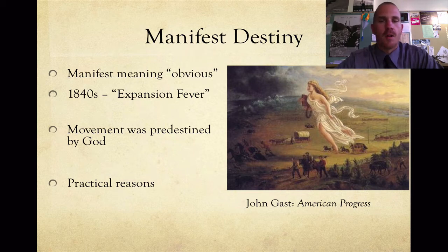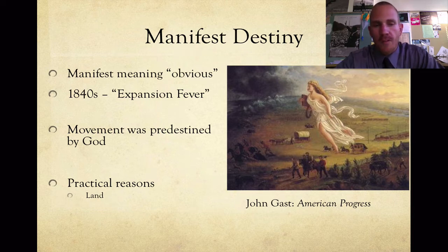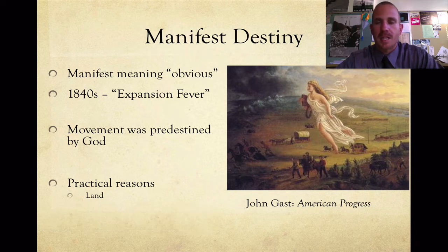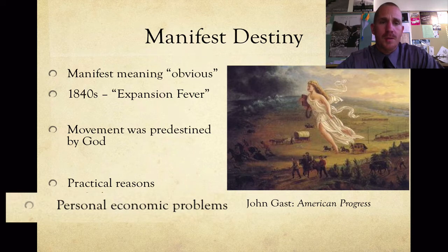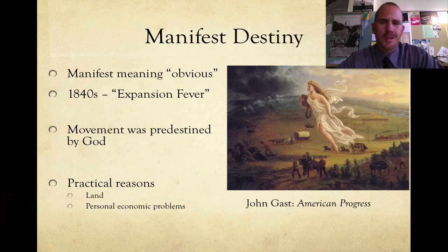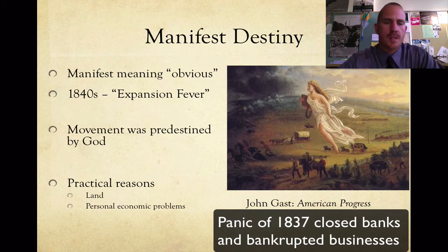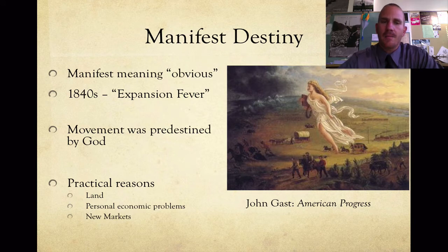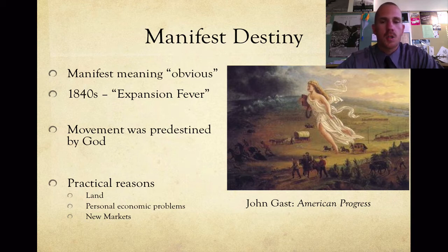People also moved west for practical reasons. The land in the South had been overworked by the cotton crop — it's so profitable they're just planting as fast as they can, but cotton is destroying the soil and ruining the ground. So they gather their things and move west to greener pastures. Second, personal economic problems after Andrew Jackson in the 1830s brought mini panics and downturns. Third, a new market — increased railroad activity linked smaller towns, and moving west created new markets to sell goods.